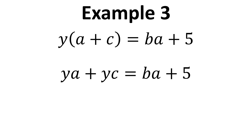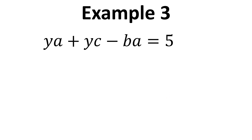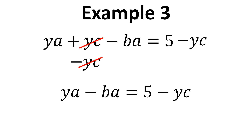The next step is to gather all the terms with A on one side and all the terms without A on the other side. We're going to subtract BA from both sides, which cancels on the right hand side and gives us YA plus YC minus BA equals 5. We then subtract YC from both sides to move all terms without A over to the right hand side, leaving YA minus BA equals 5 minus YC. We've now got all the A terms on the left hand side and all the terms without A on the right hand side.